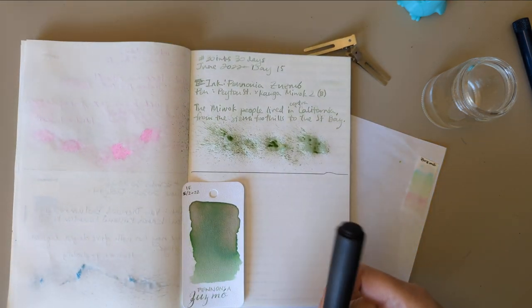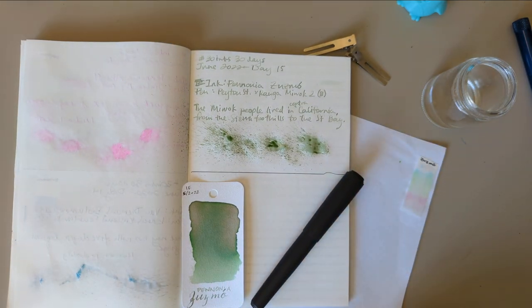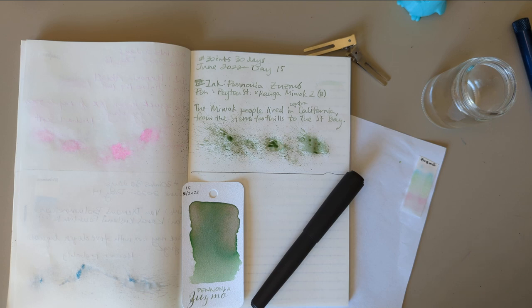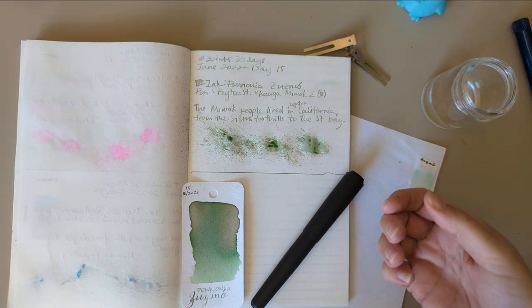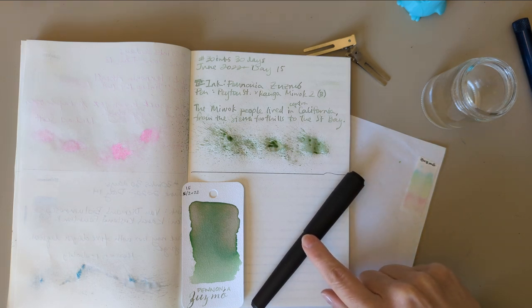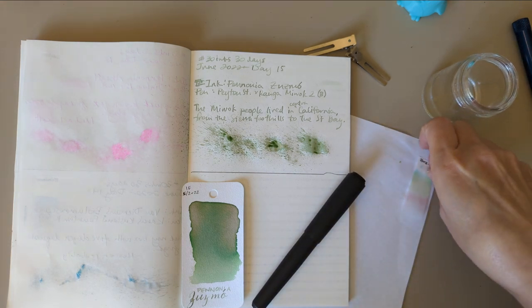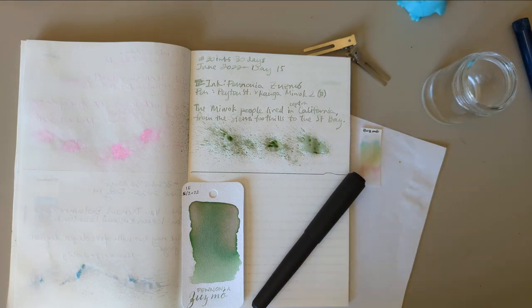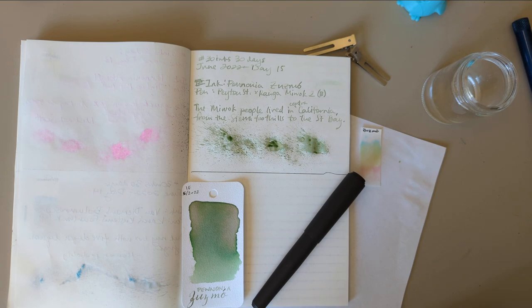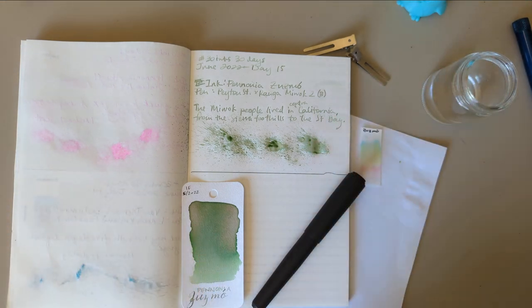So today, the 15th of June, halfway through the month, we have Pannonia Zuzmo in our Peyton Street Pens and Ranga collaboration, the Miwok 2. I hope you have enjoyed this. I've enjoyed playing with ink. Have a lovely day, bye everybody!